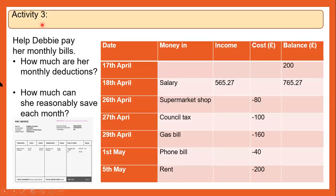For activity three, we're going to help an imaginary person called Debbie pay her monthly bills. How much are her monthly deductions and how much can she reasonably save each month? Here we have a table with her income, her costs, and her balance, with dates ranging from the 17th of April to the 5th of May. She received a salary on the 18th of May of £565.27. Based on all her expenditures and deductions, how much are her monthly deductions and how much can she save each month? Pause here to complete this.